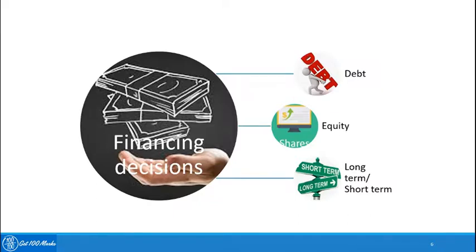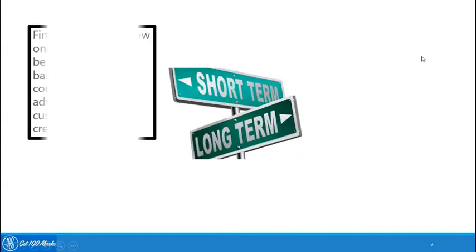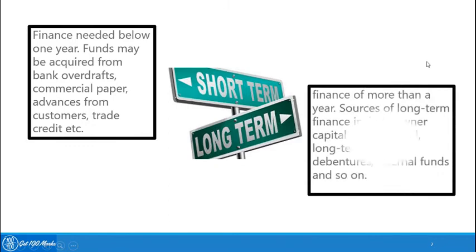Any financing decision made for a year or less is a short-term decision. Anything beyond that is classified as long-term, or further broken into mid-term and long-term. That covers the four major finance function decisions.